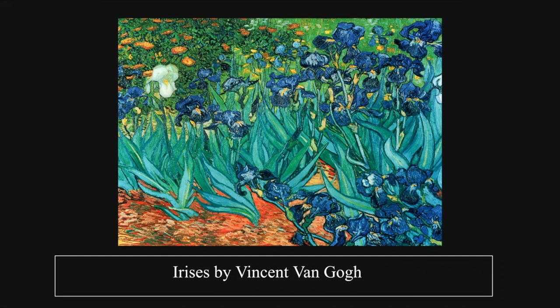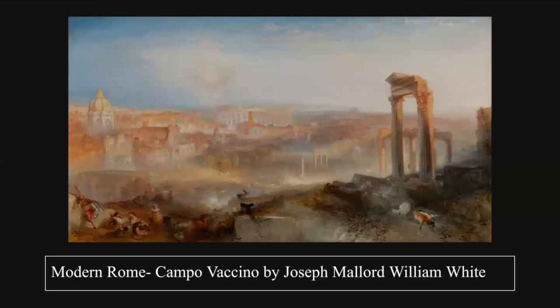Hello everyone, my name is Leonardo de Aro, and today I will be talking about two paintings that I like, which is Irises by Vincent van Gogh and Modern Rome by Joseph Mallord William Turner.